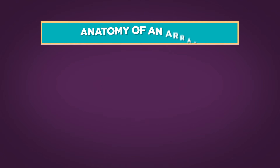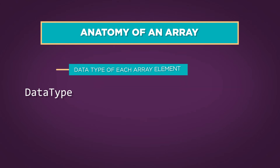Let's see how we can use arrays when coding in Java. We can create arrays with the following steps. First, we write the data type, which can be a primitive, like an int or a double, or a reference, like an object. Then, we add square brackets.